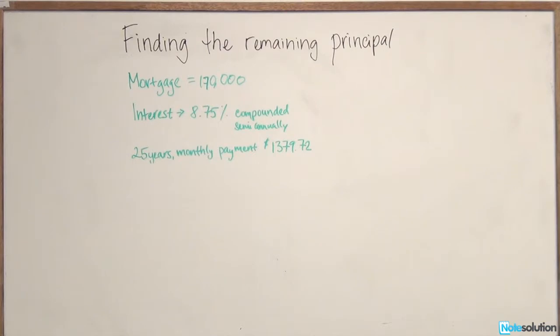They've been set an interest rate of 8.75% compounded semi-annually. The initial mortgage was for 25 years, and the monthly payment was $1,379.72. This couple has been paying this mortgage for five years, and they want to know how much of the principal is still remaining.